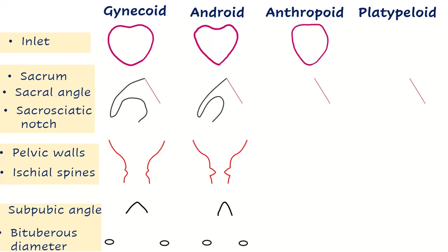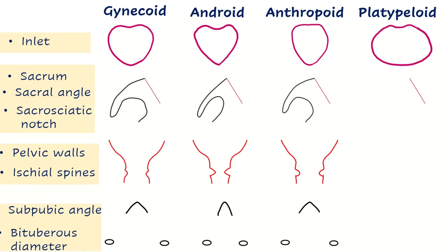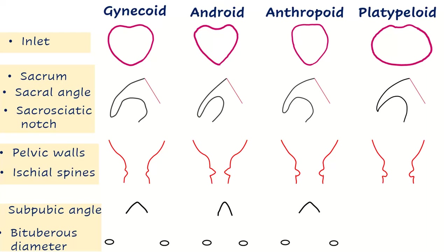In anthropoid pelvis, the pelvic inlet is anteroposteriorly oval, sacral angle more than 90 degrees, sacrosiatic notch is wide and shallow, pelvic walls are divergent and ischial spines are not prominent, sub-pubic angle is slightly narrow, and bituberous diameter is normal. In platypelloid pelvis, the inlet is transversally oval, sacral angle more than 90 degrees, sacrosiatic notch is slightly narrow and small, pelvic walls are divergent and ischial spines are not prominent, sub-pubic angle is very wide, and bituberous diameter is wide.